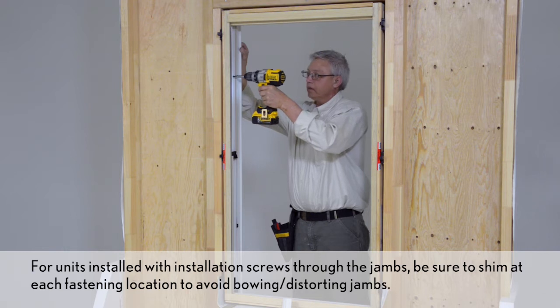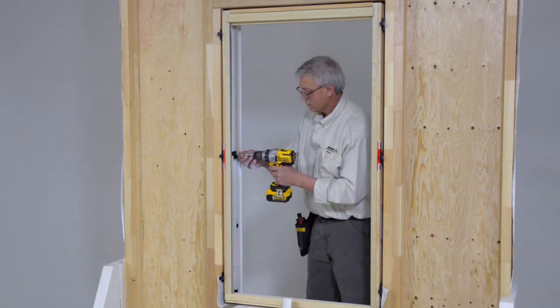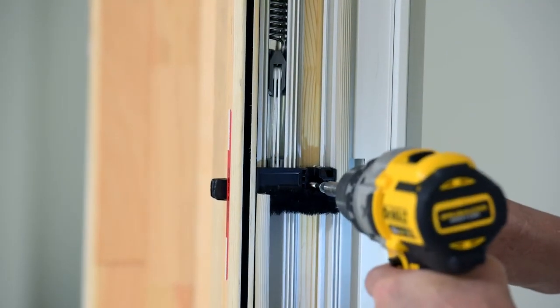Secure the frame to the opening using a number 8 by 3 inch screw through the pre-marked installation holes and through the center of the jam receiver assembly.